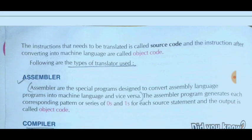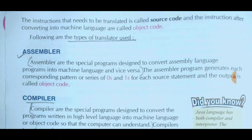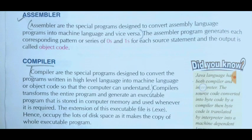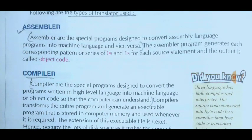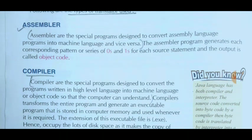There are three types of translators available in a computer: first is assembler, second is compiler, and third is interpreter. Assembler is a translator which is used to convert assembly language programs to machine language. Assembly language uses mnemonics, which are abbreviations of words. The program required to convert assembly language code to machine language is called an assembler.